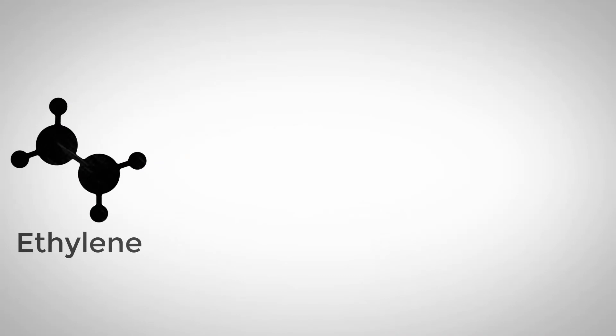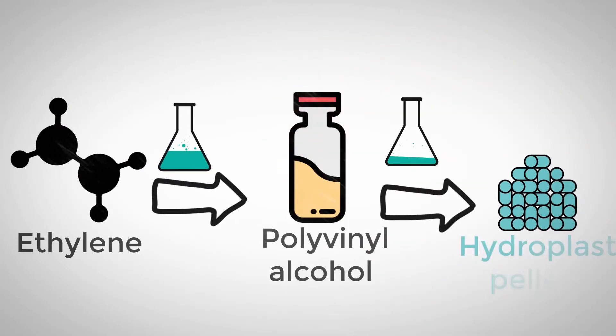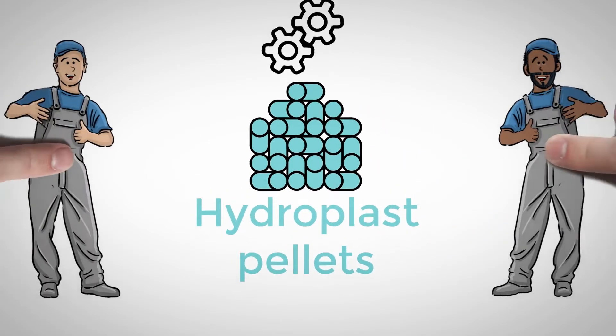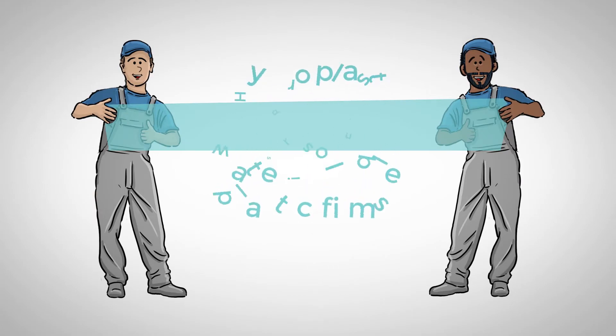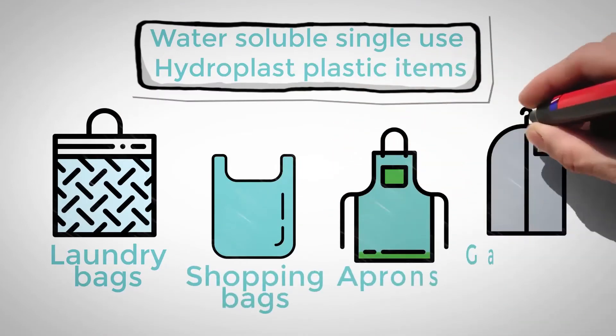Hydroplast products start their lives as polyvinyl alcohol, a refinery product originally derived from ethylene. We then use convenient plastic manufacturing equipment to create a wide range of water-soluble, single-use Hydroplast plastic items, including laundry bags, shopping bags, aprons and garment bags.